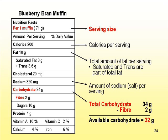To review the three things you need to look at on the label: first, serving size — are you having one muffin, half a muffin, or two muffins? Second, the carbohydrate amount — total grams of carbohydrates. Third, minus the fiber to get the available carbohydrates: 34 grams minus 2 grams of fiber equals 32 grams of available carbohydrates that will affect your blood glucose. Serving size, total carbohydrates, minus fiber.